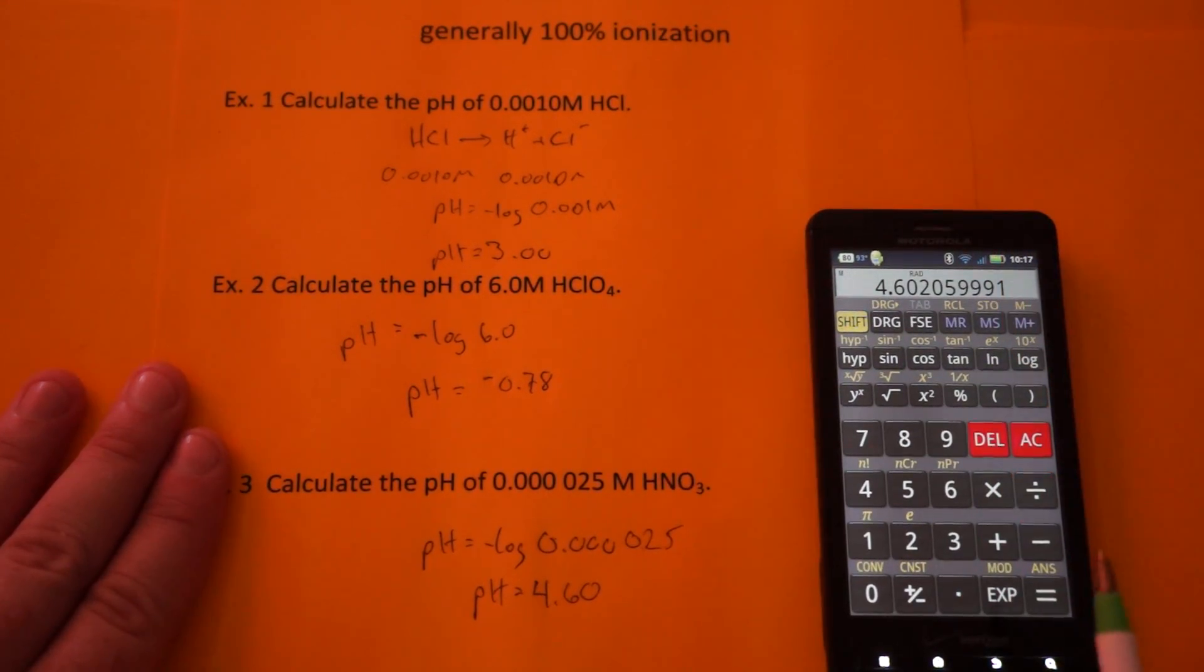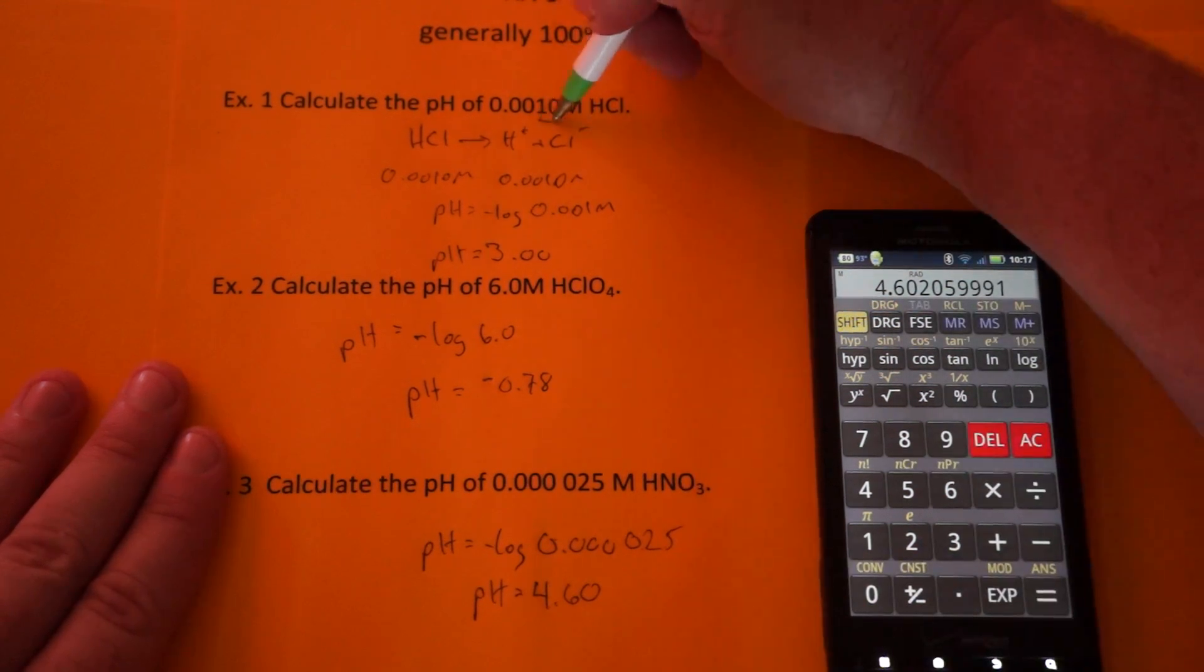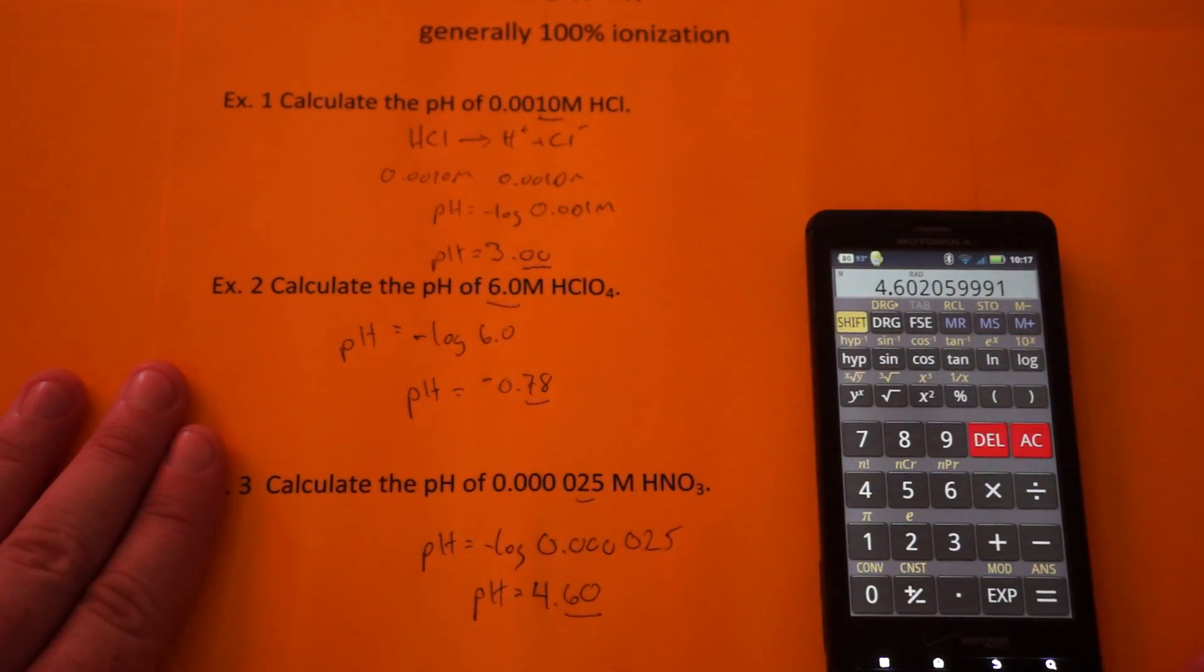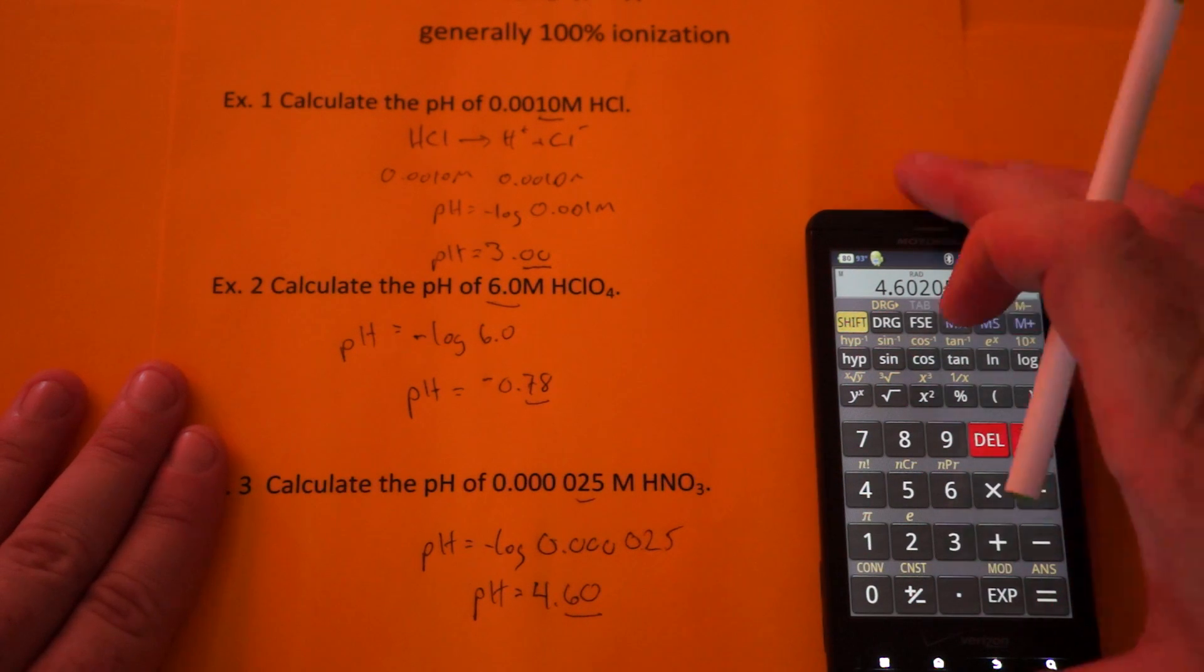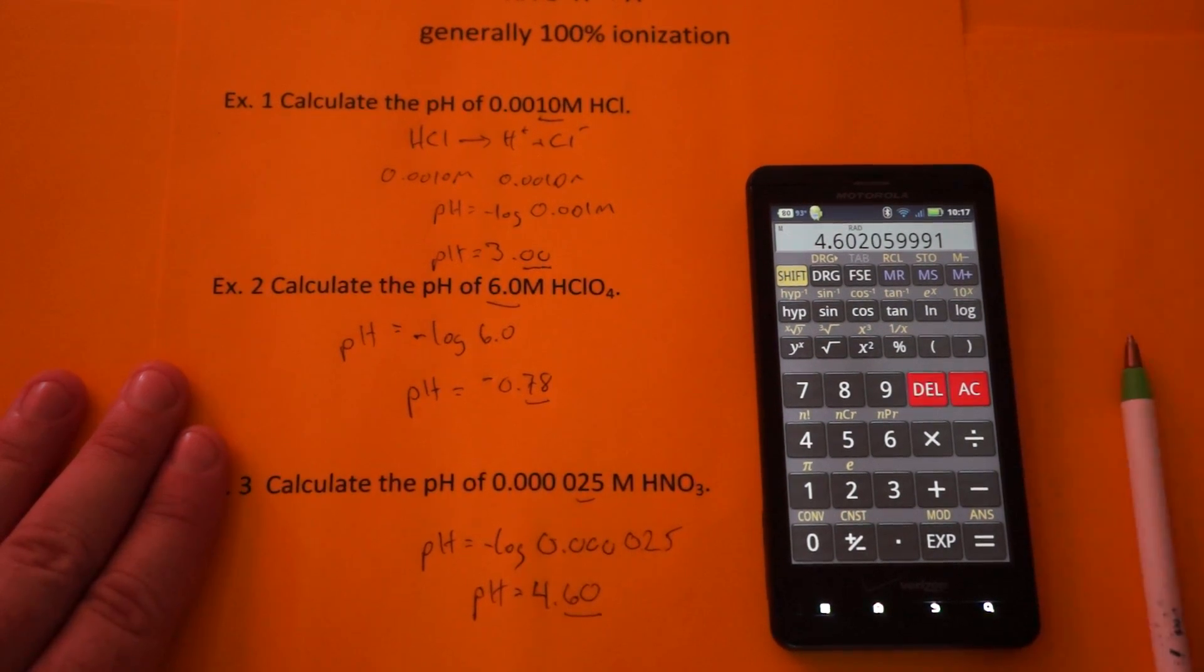When you're rounding your pH, since you're using logs, the sig fig rule is: since this has two sig figs, you're supposed to have two decimal places. Two sig figs, two decimal places. The number in front is telling you how many places you're moving the decimal in the concentration. And that's how you calculate the pH of strong acids.